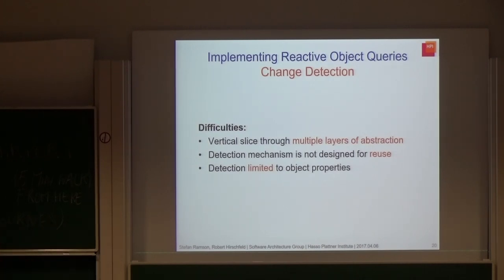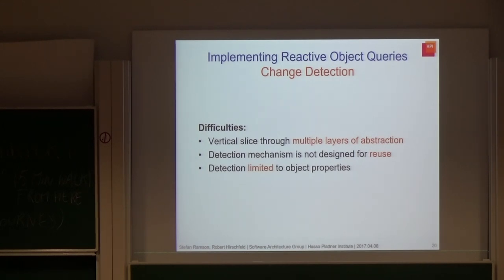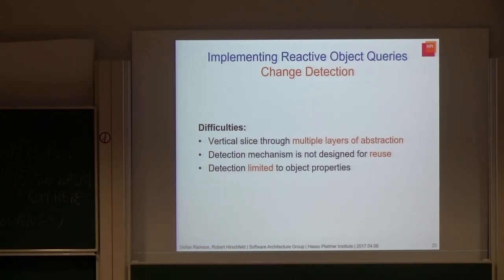So why is this so tedious? First, we have to implement vertical slices through multiple layers of abstraction — from our high-level view of objects, groups, and conditions, down all the way to browser specifics. Second, change detection mechanisms are usually not intended for reuse; they are tightly coupled with the reactive part to maximize expressiveness and performance. Third, the presented approach is very limited: you can only detect changes to object properties, not to local variables or global variables, even though the concept of reactive object queries allows you to do so. So we have some kind of mismatch here.